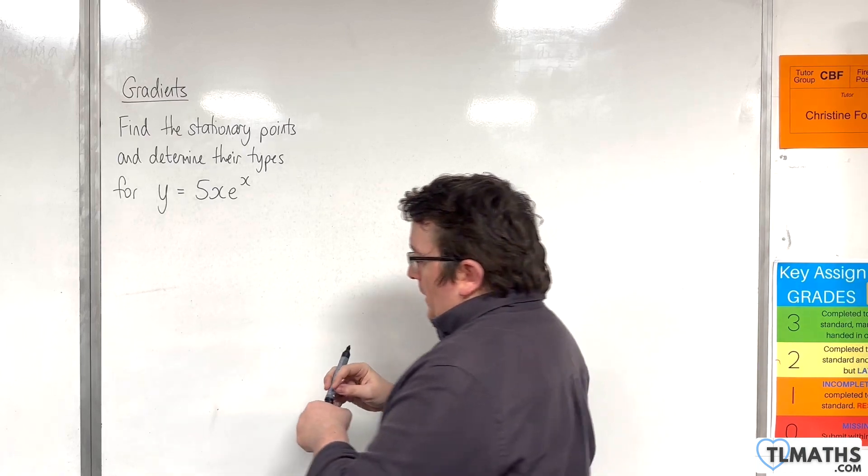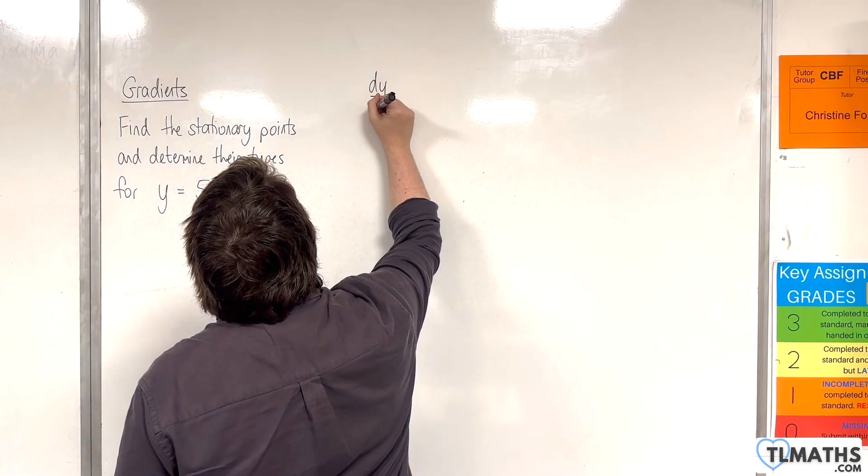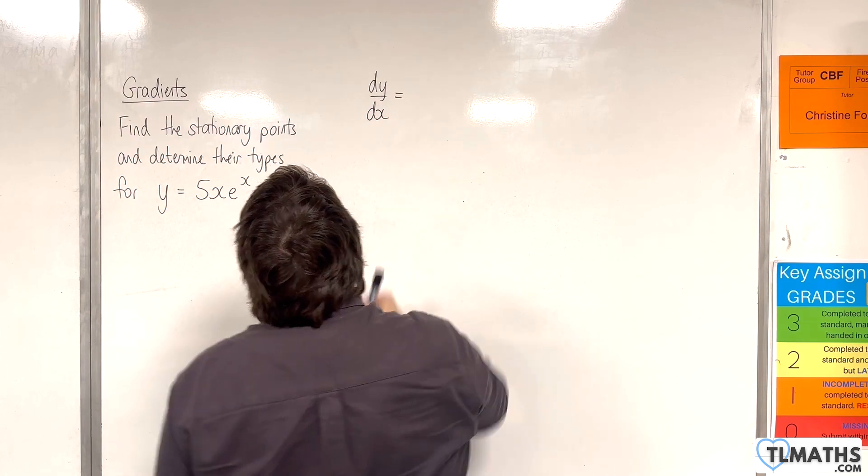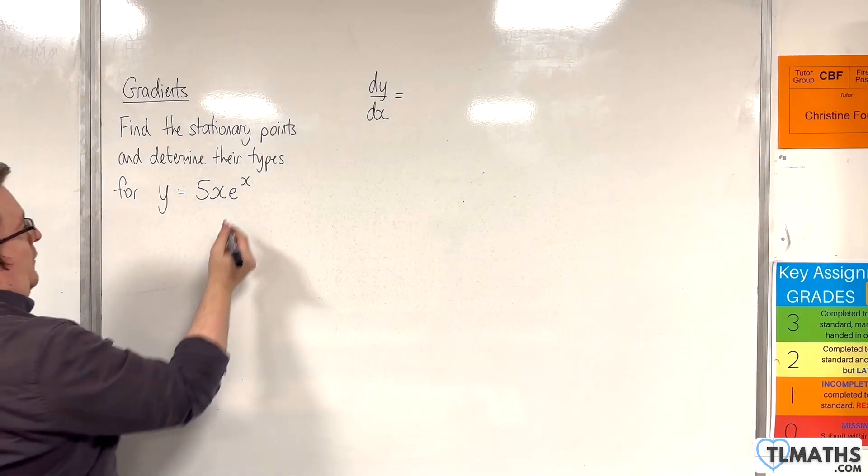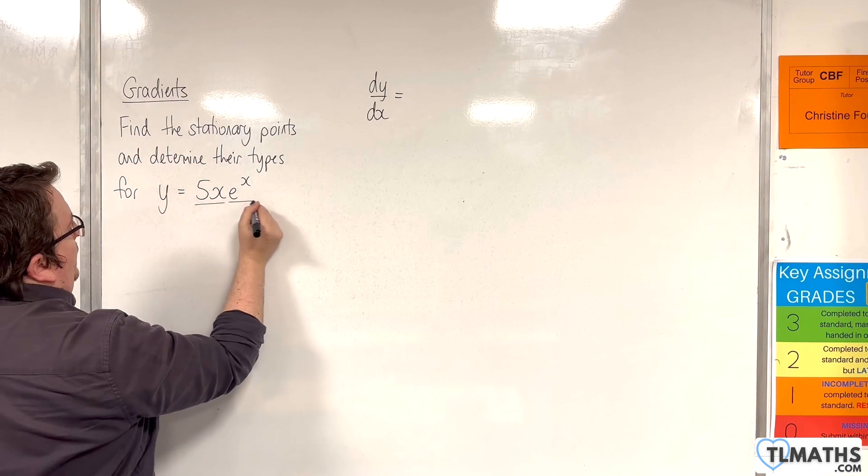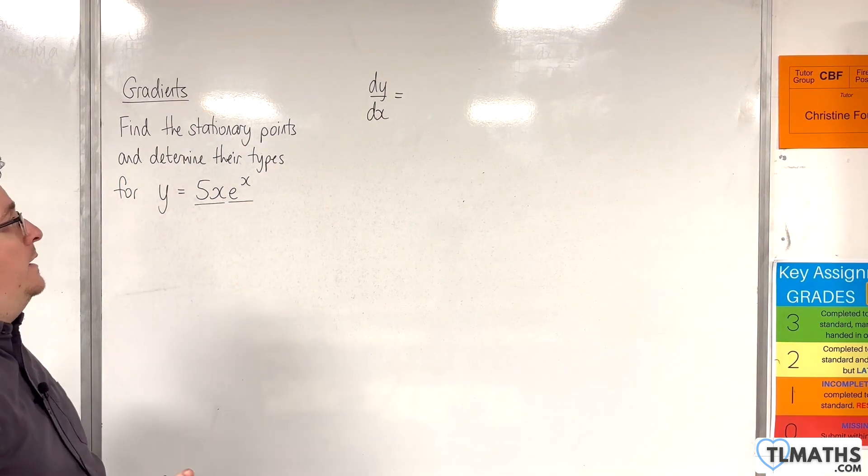The first thing that we would need to do is find dy by dx. We need to decide on how we're going to differentiate 5x e to the x. We need to spot that this is utilizing the product rule, because we have 5x times e to the x.